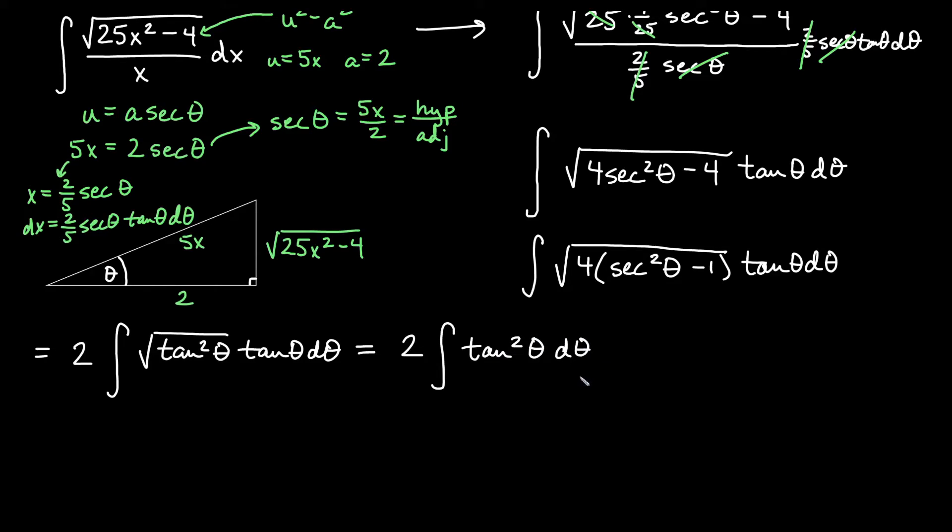If you've watched our integrating powers of tangent video in our CAL2 list, you might have noticed integrating tangent squared theta is not actually the nicest thing to do. What is really nice to do with tan squared theta is actually to think of it as secant squared theta minus 1. Both of those are really easy to do the antiderivative of because we know a derivative that is secant squared theta.